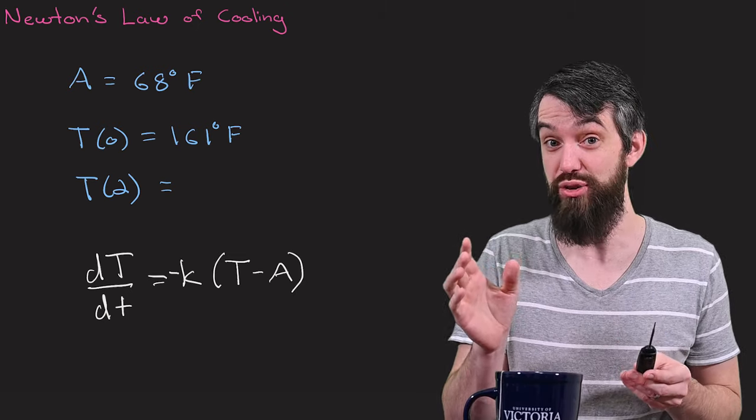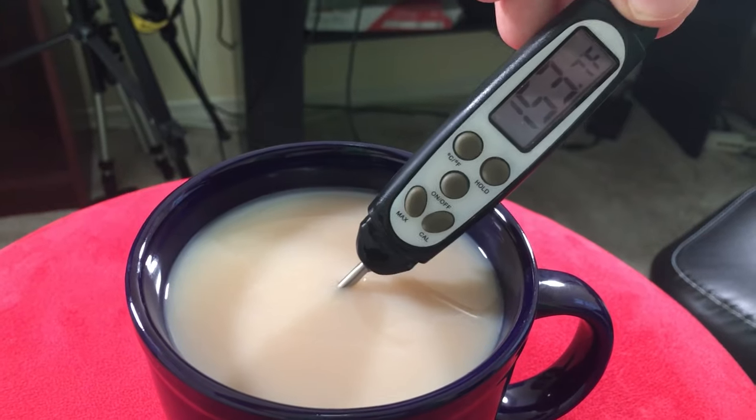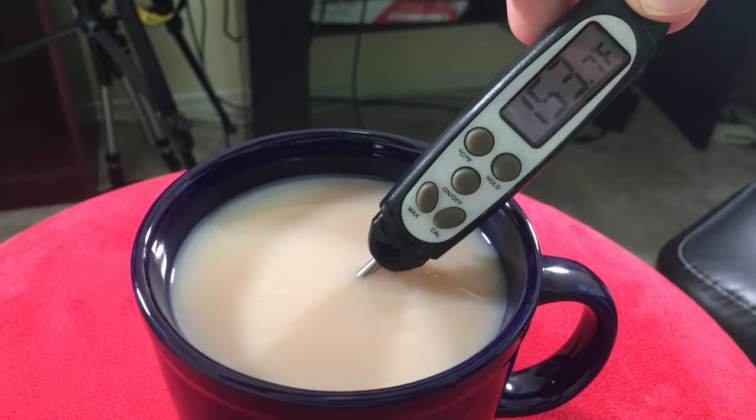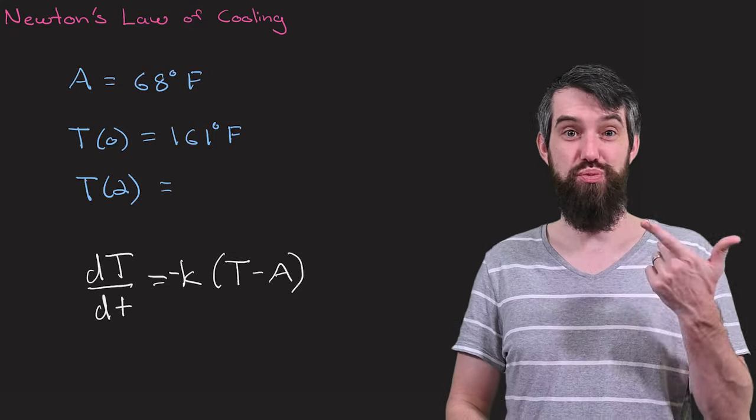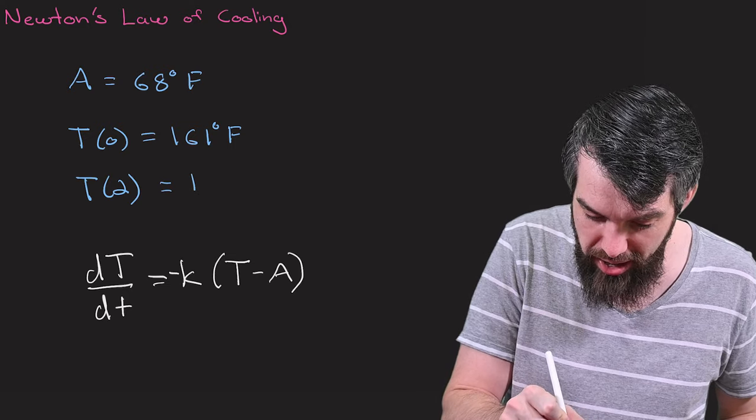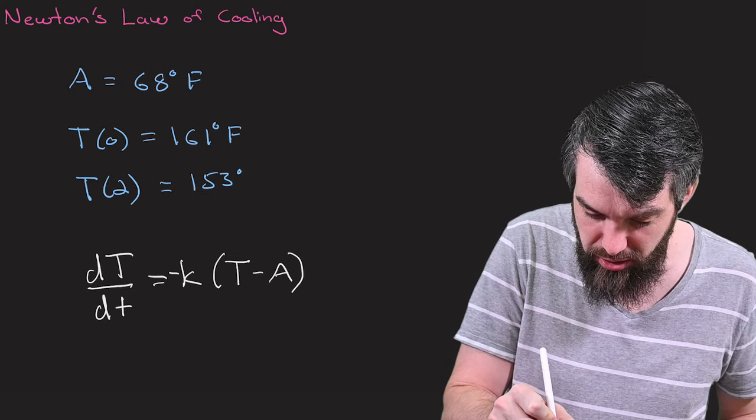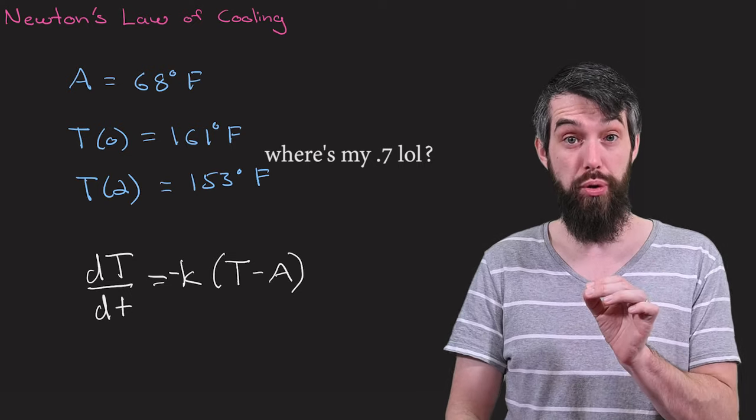Alright, so two minutes is up. Now let's try measuring it one more time. And looks like we're at 153.7, just a little over two minutes later. Okay, so I'll just record that observation. This was about 153 degrees Fahrenheit. That's what happened at time t equal to 2.